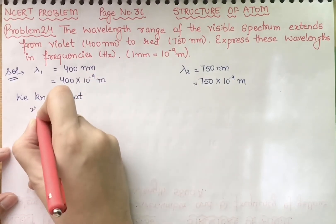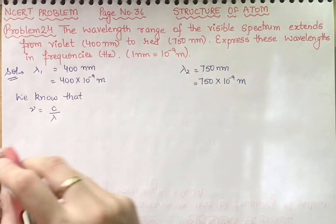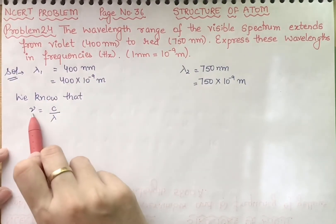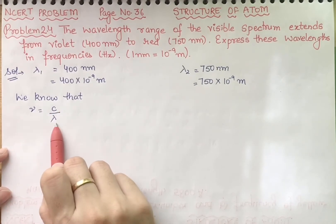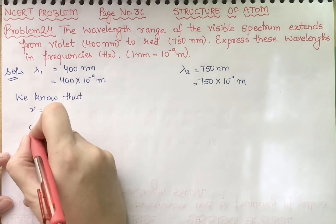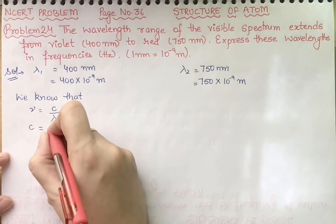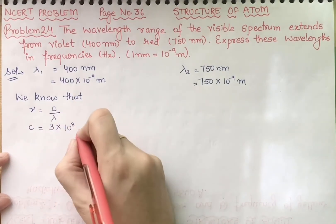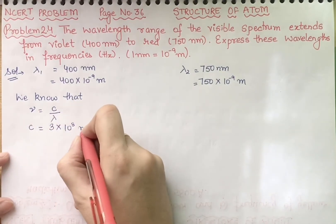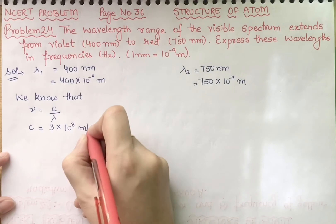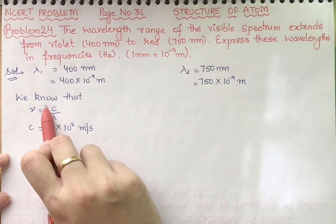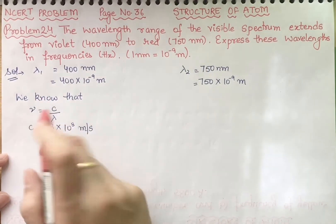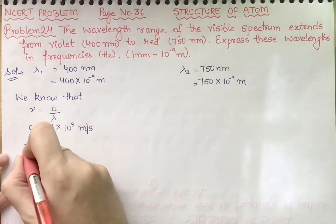We know that nu equals c upon lambda — frequency equals velocity of light divided by wavelength. The velocity of light is 3 into 10 raised to power 8 meters per second. Now we will put in the values to find nu one.